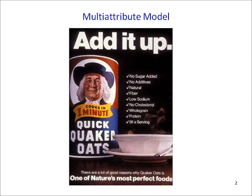Take this advertisement for Quaker Oats, for example. The product attributes are sugar, additive, fiber, etc., and Quaker Oats rates favorably on all these attributes. Of course, these particular attributes were selected by the marketers, presumably because they are important to consumers and because Quaker Oats rates well on them. This ad hopes to lead consumers to a positive attitude towards Quaker Oats.